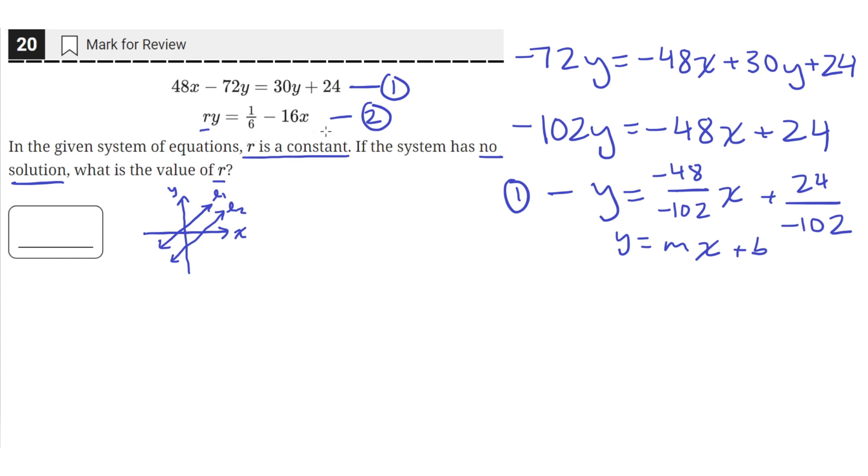So now let's write the second equation in the form y equals mx plus b. So we have ry equals 1/6 minus 16x. Let's divide both sides by r so that we get y isolated. So when we do that, the left hand side will just have a y, and then this will be 1 over 6r minus 16 over r times x. Okay, so now we have this equation in the form y equals mx plus b as well.